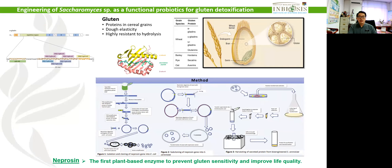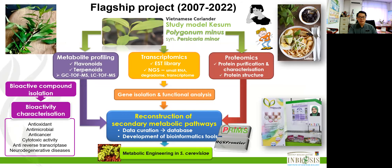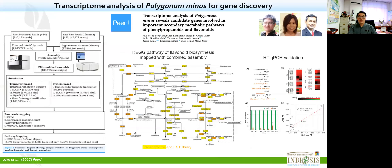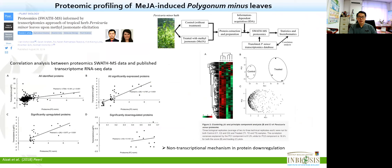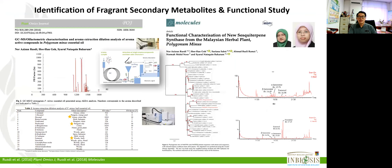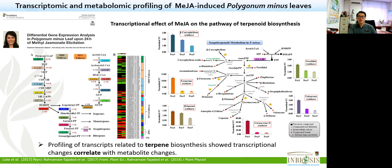We can also engineer microbes to produce useful enzymes or medicinal compounds. At Imbiosis, Polygonum minus, or Persicaria minus, has been our flagship project since its establishment. We applied different omics approaches to profile its molecular components and to illustrate the fragrance compounds and biosynthetic pathway of secondary metabolites and their benefits.